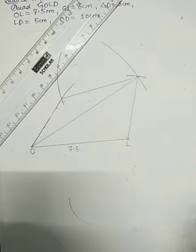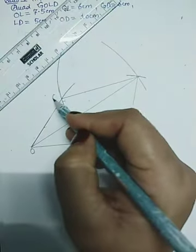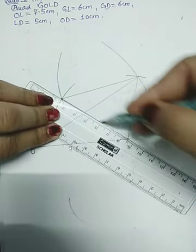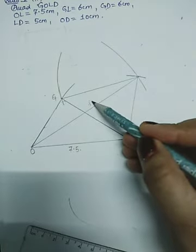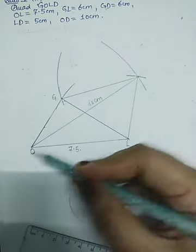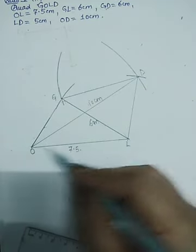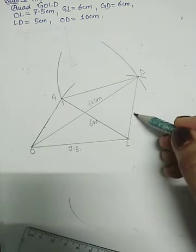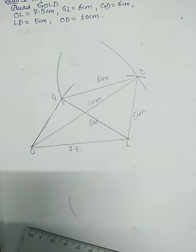By joining these arcs we can get the quadrilateral. Join this point, this is G, G to L. Give the measurements. This was 10 centimeter, GOLD, and this was six centimeter. This side is of seven point five centimeter and I have drawn this length of five centimeter. This was six centimeters GD. Hence done.